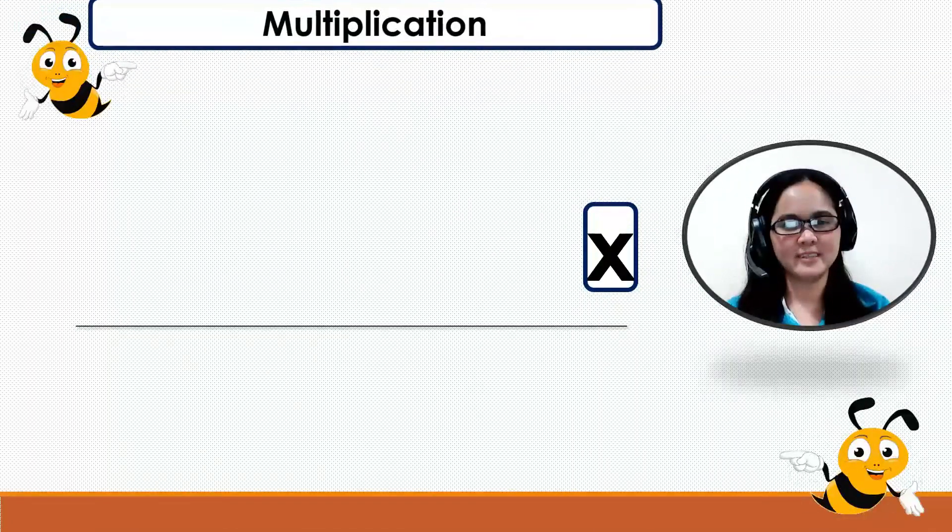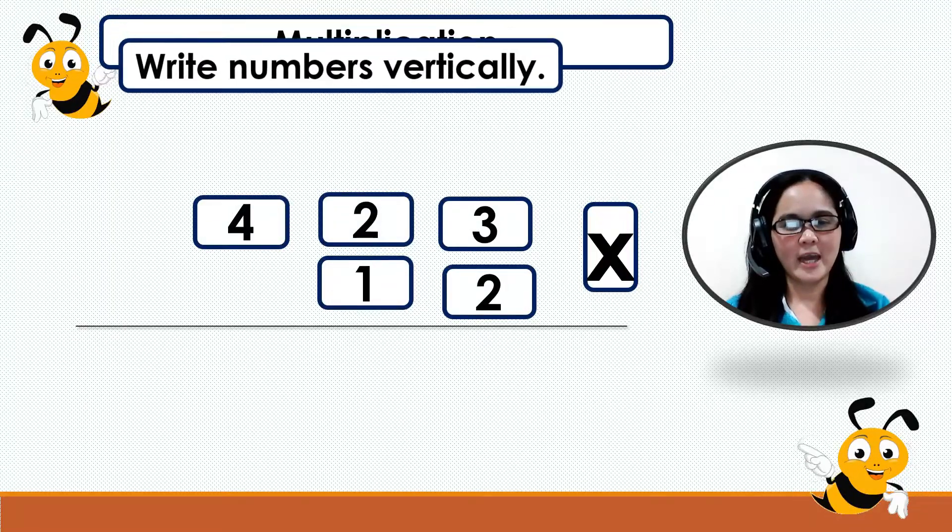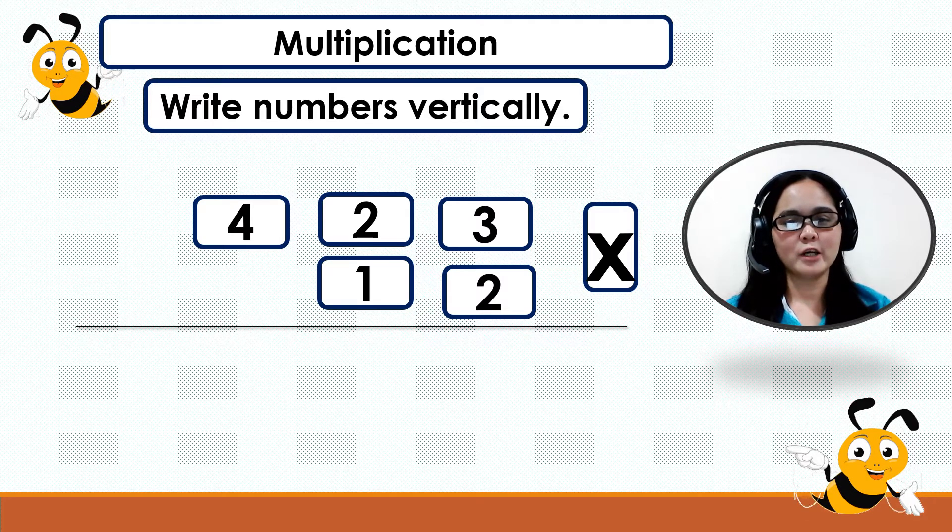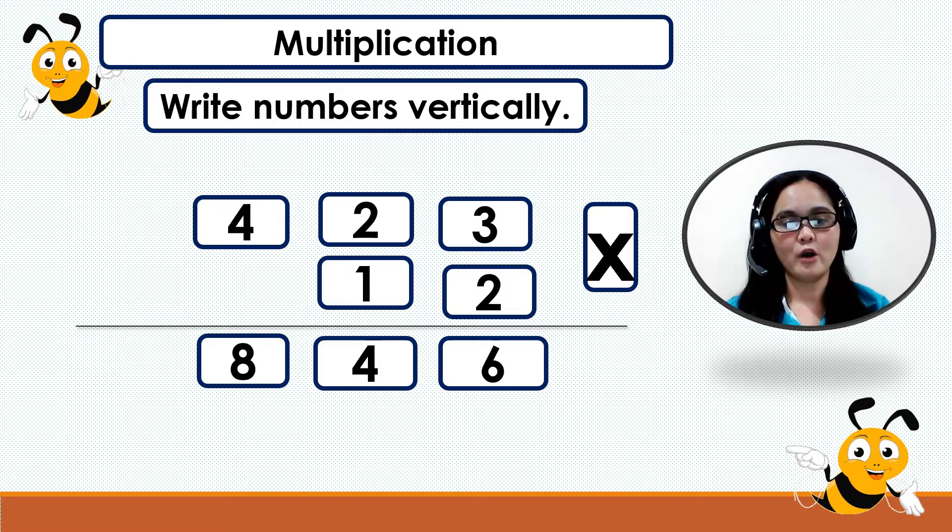Example: We have 423 times 12. So write numbers vertically. First, 423 times 2. 2 times 3 equals 6. 2 times 2 equals 4. 2 times 4 equals 8.